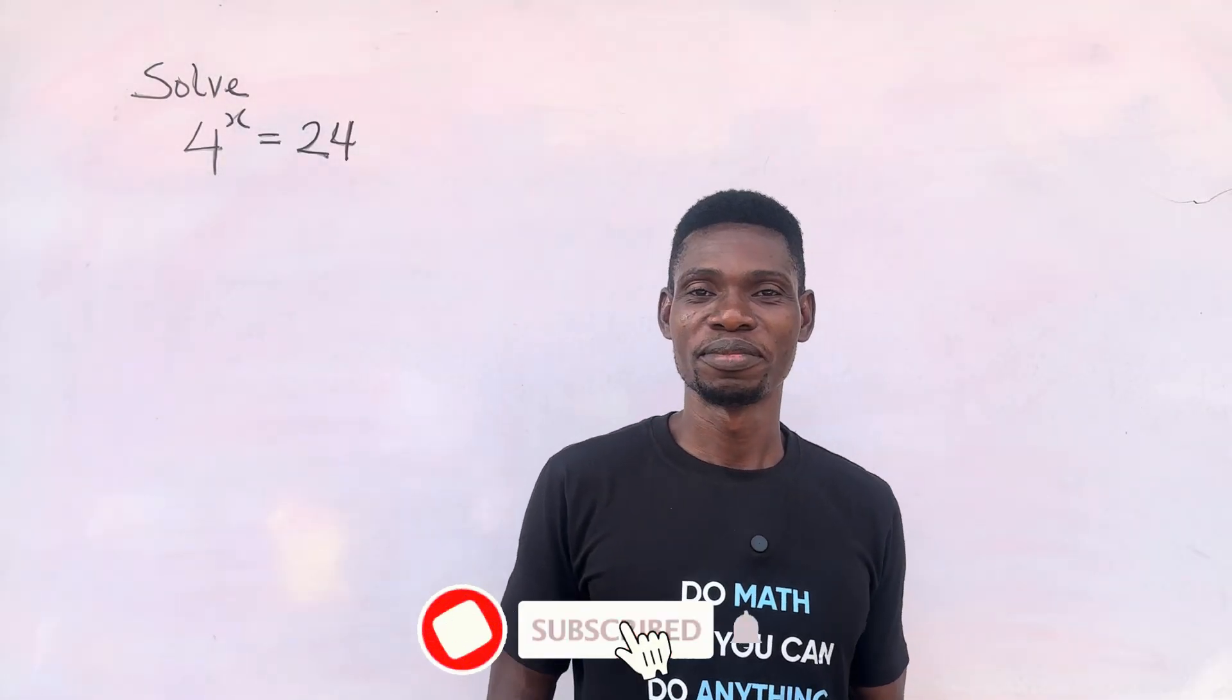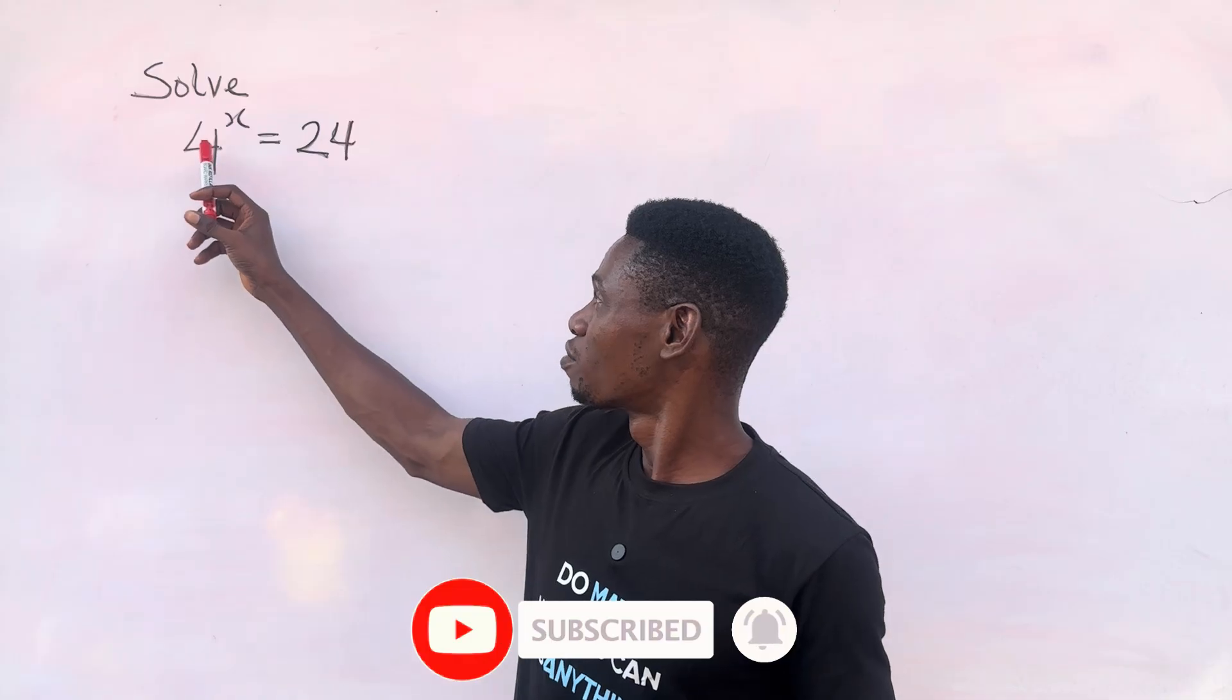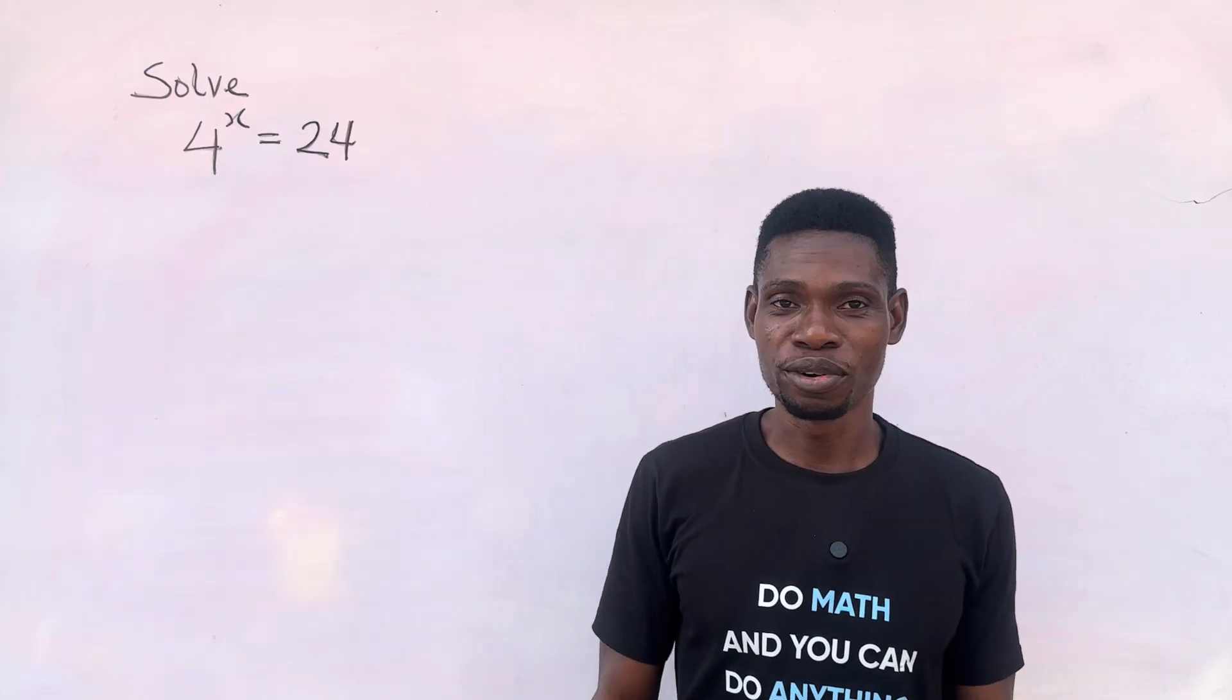Welcome back, this is El Sam. Today we are going to be solving this exponential equation that says 4 raised to the power of x equal to 24.